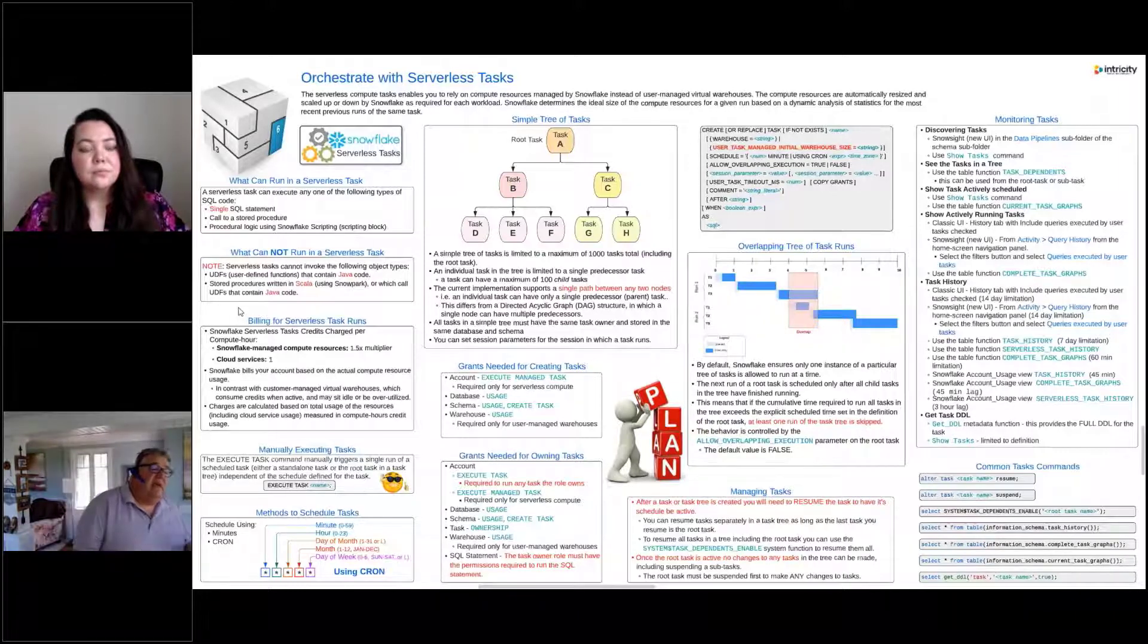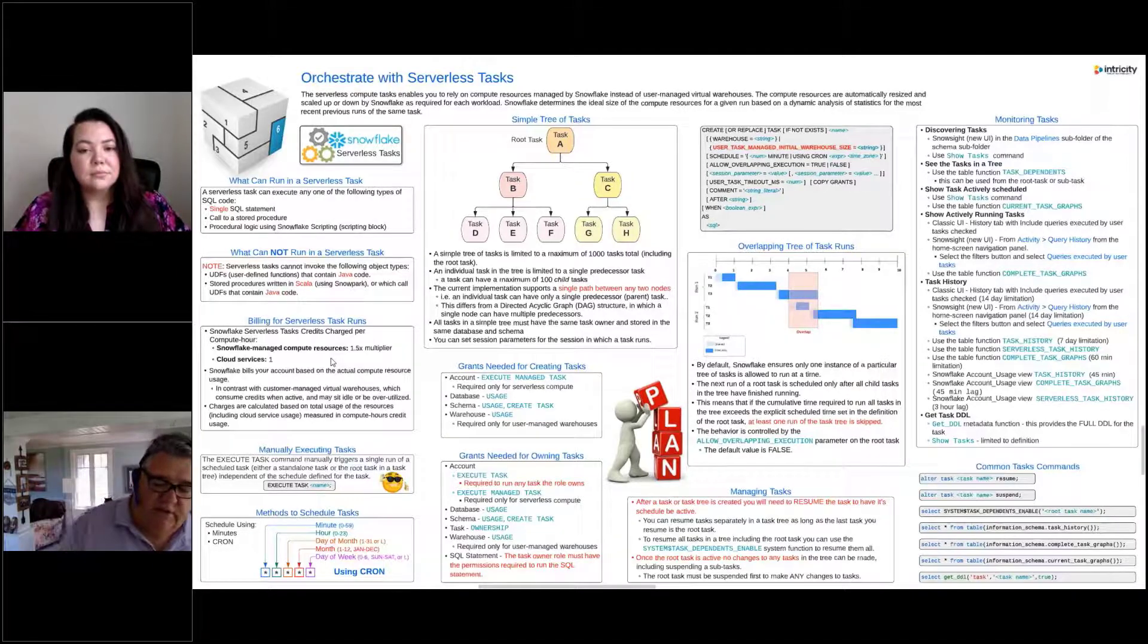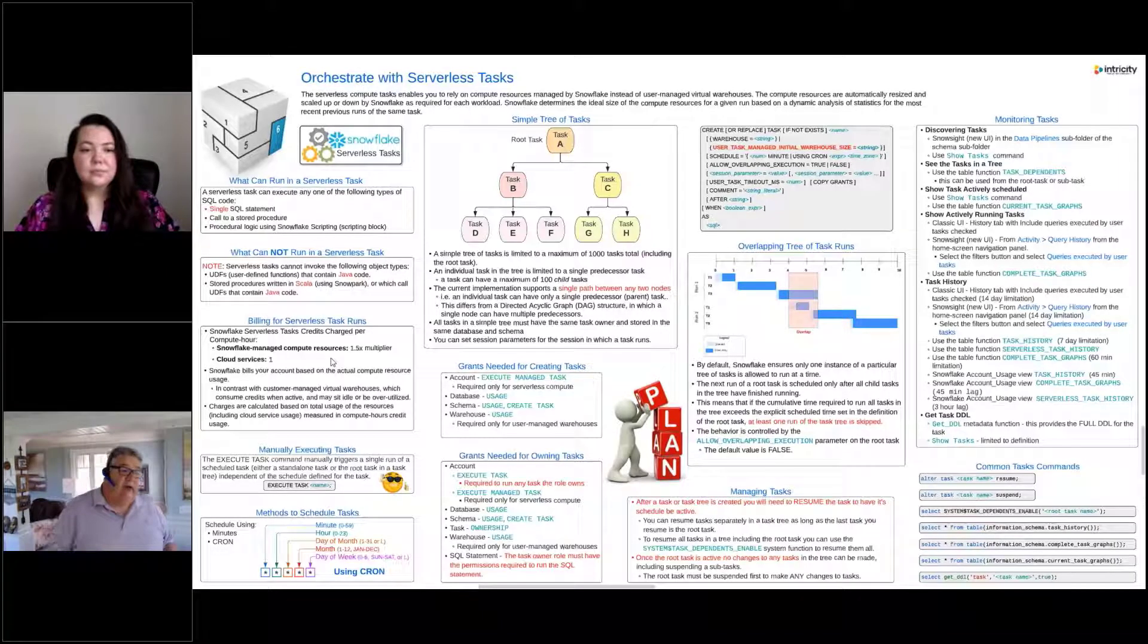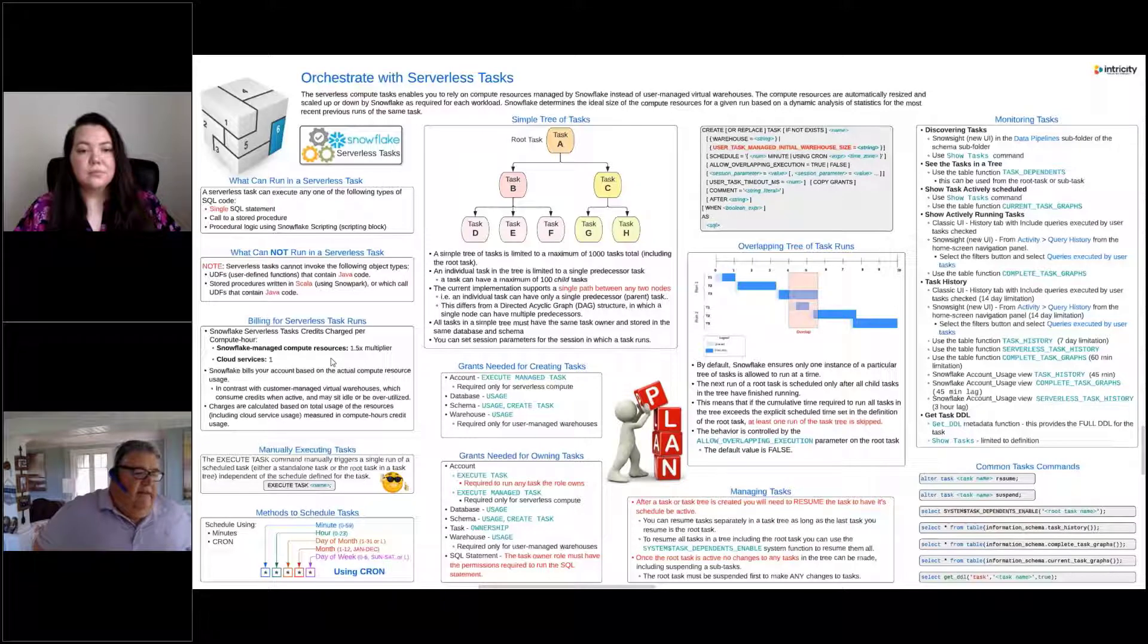For a serverless task, because we're not managing those warehouses, the way that the billing works is that we're charged a 1.5 times multiplier for the Snowflake managed compute resources, and there's also some cloud services time. So what that means is, let's say we had a task and it ran for an hour on an extra small, that would be 1.5 credits, whereas a normal virtual warehouse that runs for an hour is one credit.